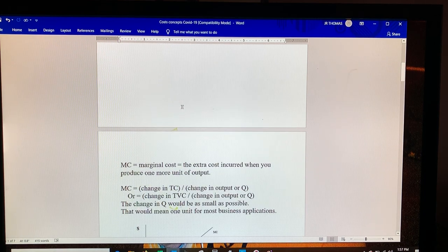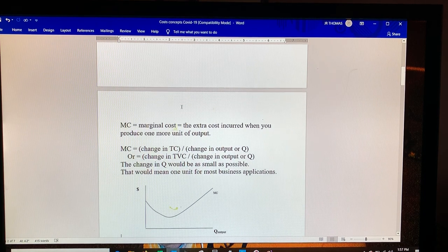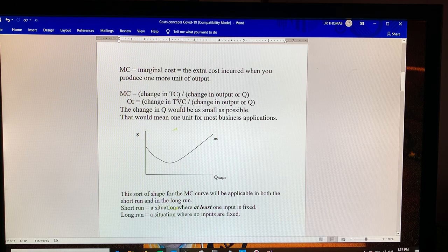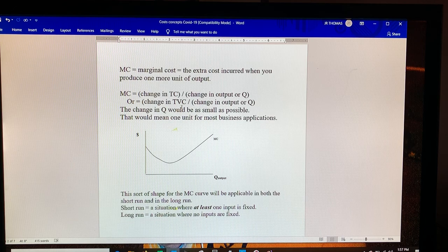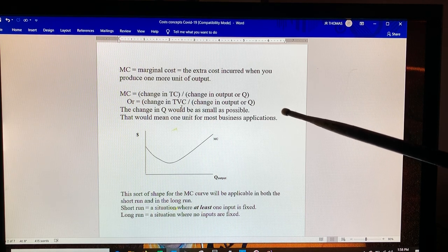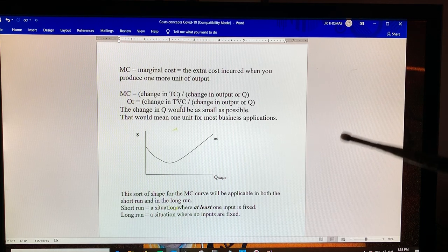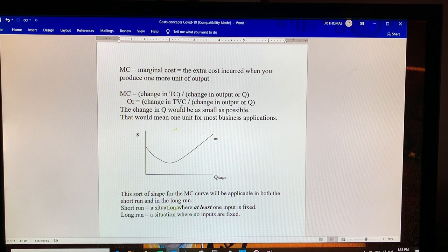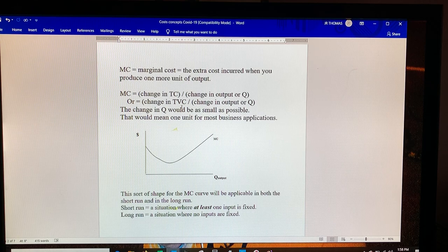We also looked at marginal cost, which is the change in your cost of making a little bit more. Now for most businesses, that would mean one more—you can't make half a computer, half a shirt, things like that. So most businesses, the smallest amount you could make would be one.